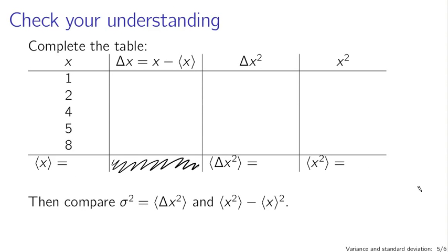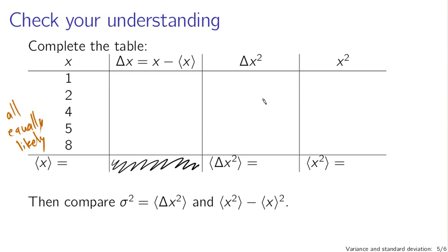To check your understanding of how to use this formula, complete the following table. If your probability distribution is given by 1, 2, 4, 5, and 8, all equally likely, calculate the mean. Then calculate the deviations x minus the mean, square that quantity, and take the mean of those squared deviations — the variance as the mean squared deviation. Then, taking the other approach, calculate the squares of all the x values, find the mean square, and compute the mean of the square minus the square of the mean. You should get the same result both ways.